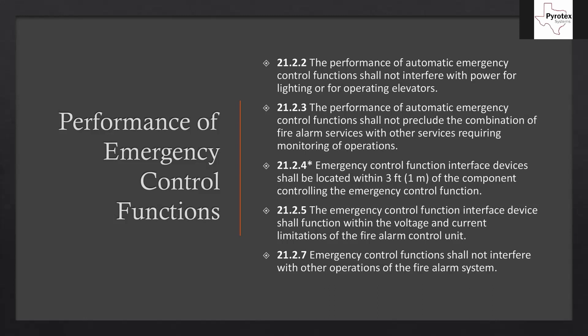The last performance point: emergency control functions shall not interfere with other operations of the fire alarm system. This is an emergency life safety system, and if they're actually using the fire alarm for its intended purpose, it means the building is on fire and things are going bad. You don't want anything to interfere with that — you want it to save as many lives as possible.